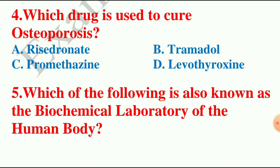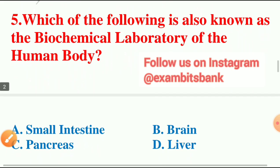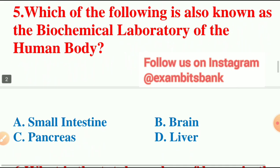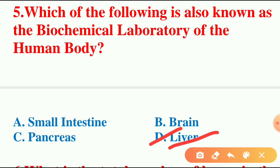Moving on to the next question: which of the following is also known as the biochemical laboratory of the human body? The options are small intestine, pancreas, brain, or liver. The answer is option D — liver. The liver is also known as the biochemical laboratory of the human body, and it makes bile that helps emulsify and digest the fats we eat.